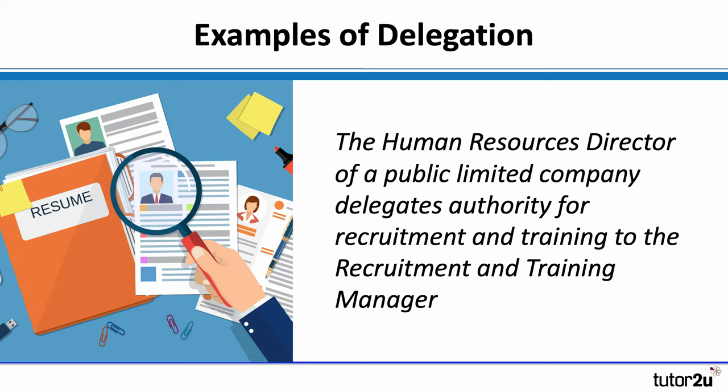Delegation can happen at different levels within a business and in different functions. Let's imagine we have a public limited company — say Tesco, a supermarket group. The board of directors will have a human resources director responsible for overall management of human resources. Clearly she or he isn't going to have time to do all the recruitment and training for head office as well as the store network. So the HR director will delegate authority for recruitment and training activities to a recruitment and training manager or director, setting some fairly firm objectives and aims for that activity.